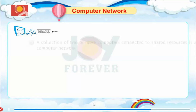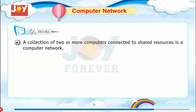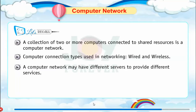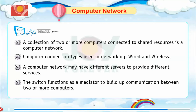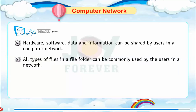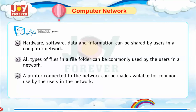Let's recall: a collection of two or more computers connected to shared resources is a computer network. Computer connection types used in networking are wired and wireless. A computer network may have different servers to provide different services. The switch functions as a mediator between two or more computers. Hardware, software, data, and information can be shared by users in a computer network. All types of files in a shared folder and a printer connected to the network can be made available for common use.